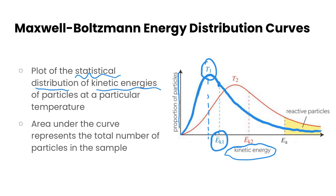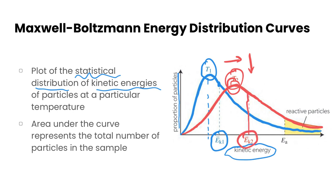Now if we do this at a higher temperature, remember that as temperature increases we increase the number of particles that have successful collisions. We get a shift of the distribution to the right, but it also flattens down so its maximum is not as high as at the lower temperature. We get a smaller peak shifted to the right, with the average kinetic energy also shifted to the right.